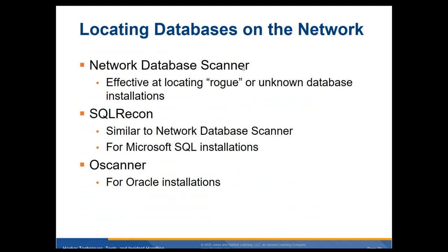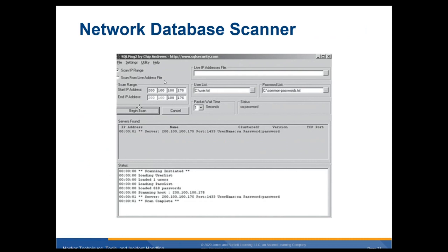How to locate a database on a network: network database scanners are effective at locating rogue or unknown database installations. SQL Recon is similar to a network database scanner for Microsoft SQL installs, and OScanner is used for Oracle installations. Since databases use certain port numbers, these tools can sniff them out on the network.